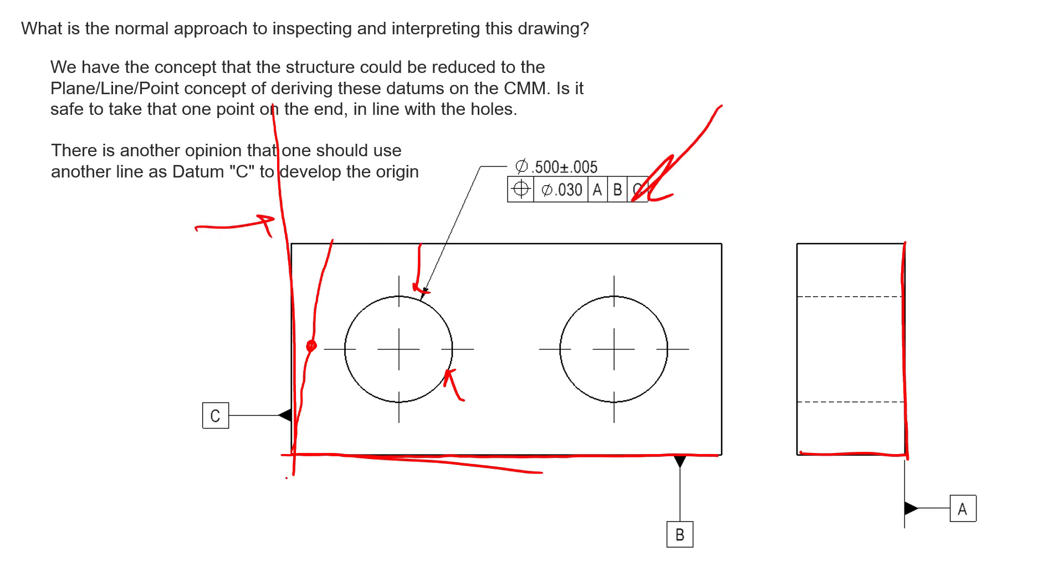Not just this randomly selected plane as to where we took that point from. Indirectly, this question is getting to a very important point, and that is why we qualify datum features. To answer your question, the best way to inspect this would actually be to take more points than three here, more points than two here, and a lot more points than one here.